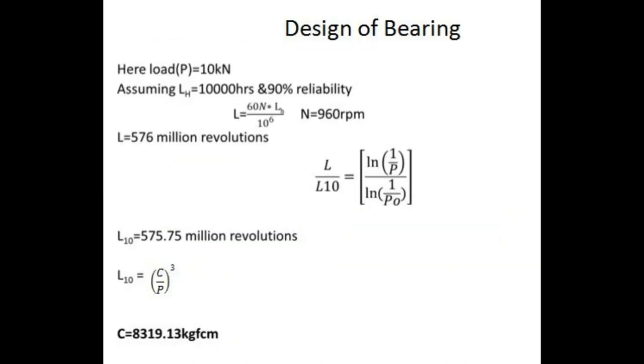Now design of bearing. Here load P equals 10 kN, assuming LH equals 10,000 hours and 90% reliability. Where L equals 60N times LB divided by 10^6, where N equals 960 rpm.